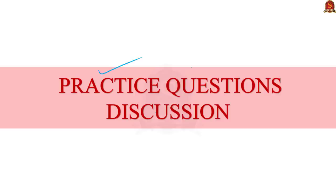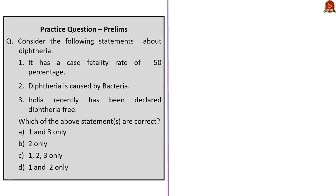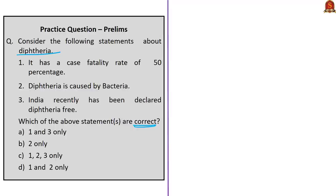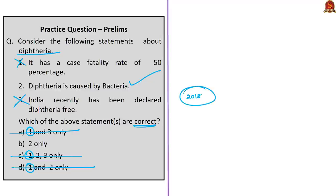Now we come to the practice questions discussion. Question one on diphtheria: Statement one — it has a case fatality rate of 50%; this is incorrect, the rate is around 2–3%. Statement two — diphtheria is caused by bacteria; this is absolutely correct. Statement three — India has recently been declared diphtheria-free; this is incorrect, as in 2018 India had 50% of the global load of diphtheria cases. The correct answer is option B — statement two only.